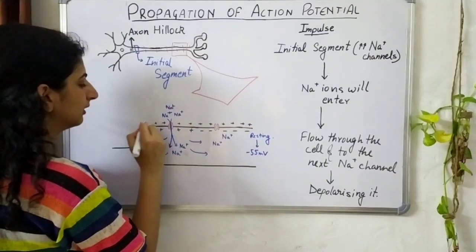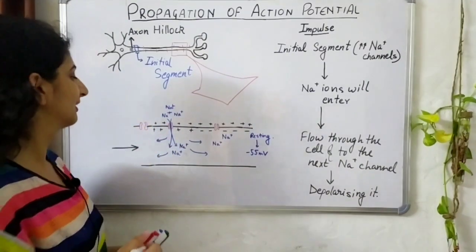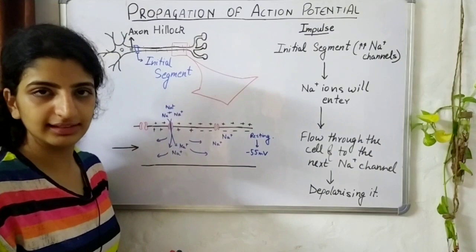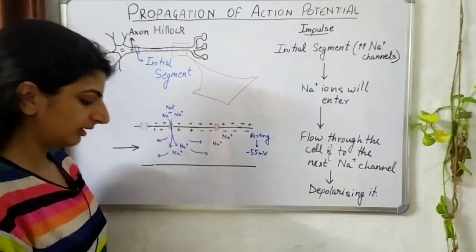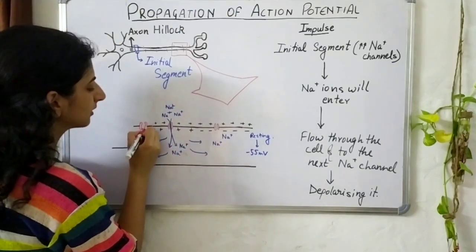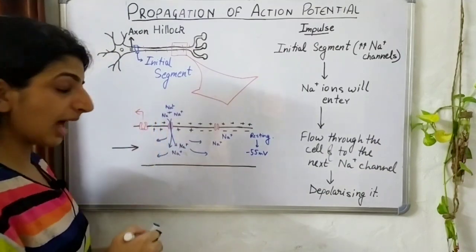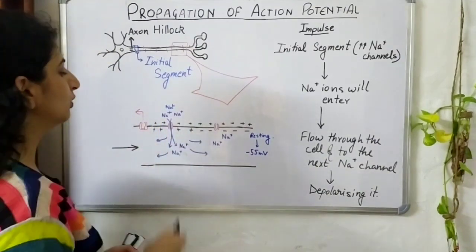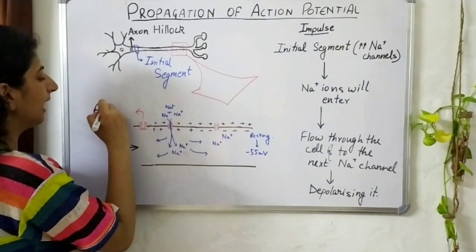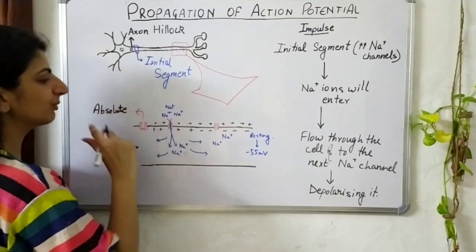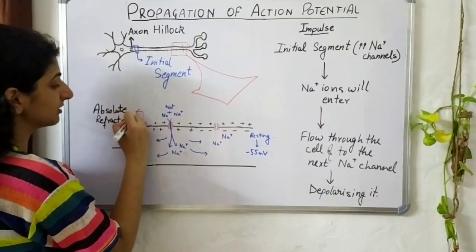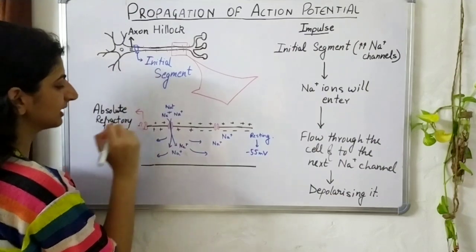For this, you'll have to remember the refractory period that we studied. As these ions move to depolarize the next channel, the previous channel's inactivation gate closes. This channel will be in the absolute refractory period, and no matter how much it is depolarized, this channel will not open again. Therefore, this action potential will just move in one direction — and this is where the importance of the refractory period comes in.